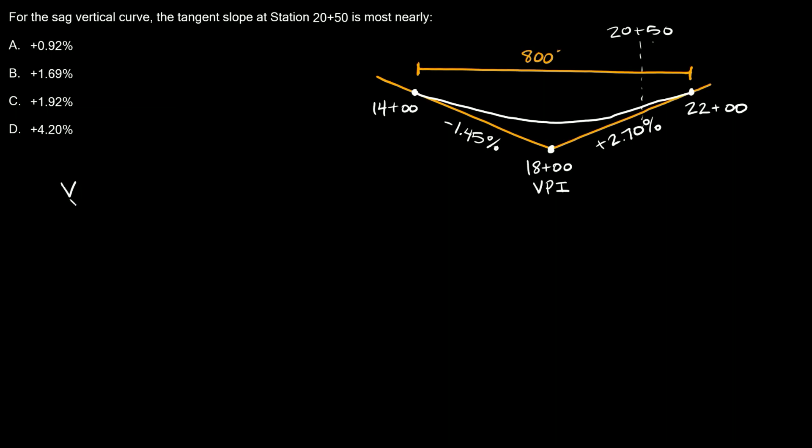Is equal to Y_PVC plus G1*X plus X squared times (G2 minus G1) all over 2L.